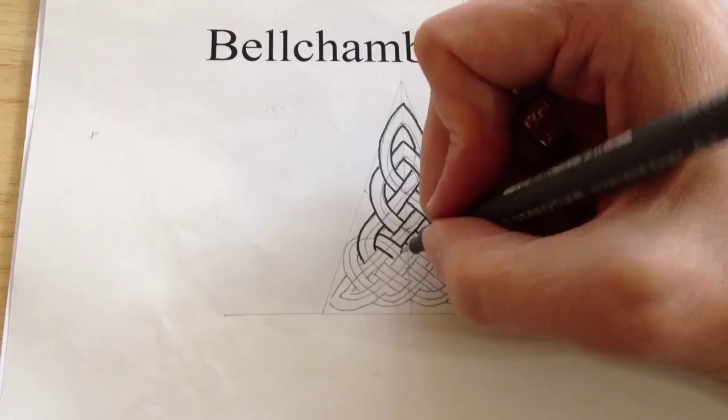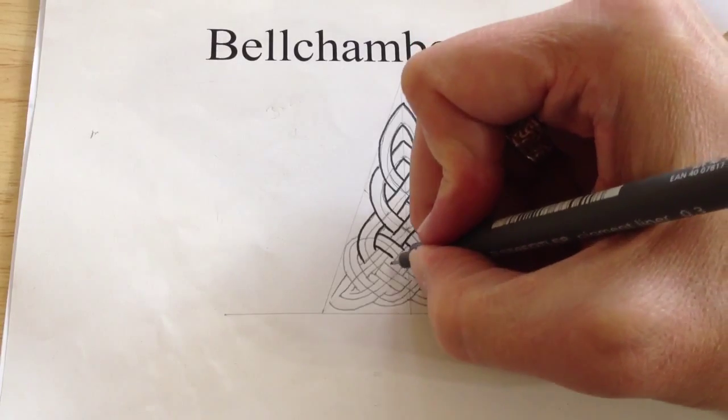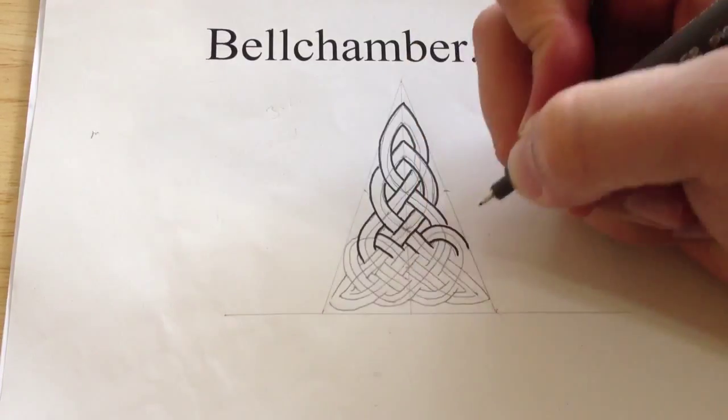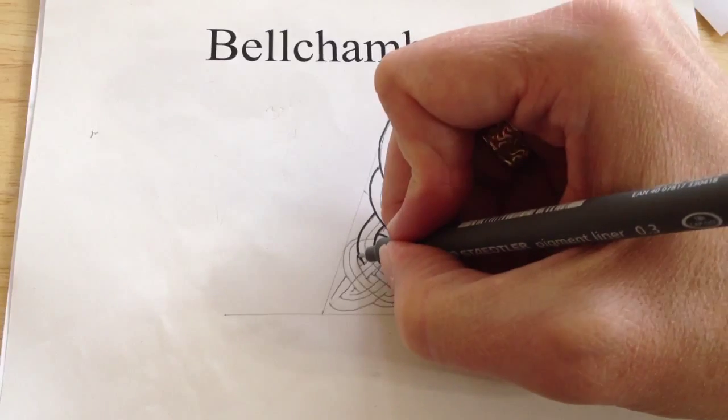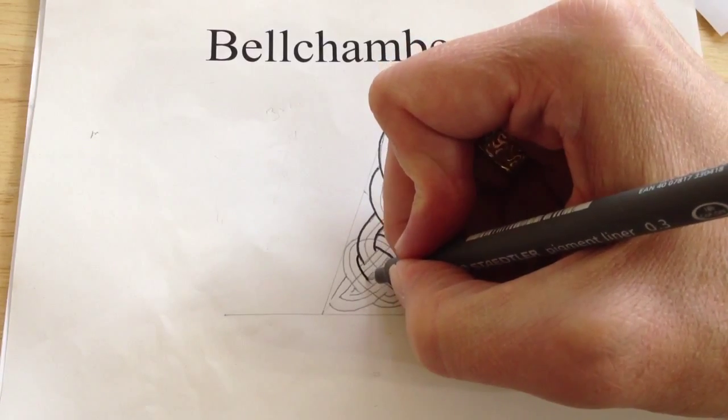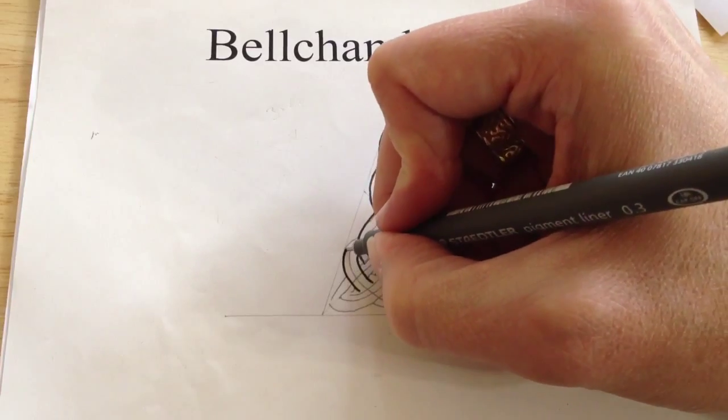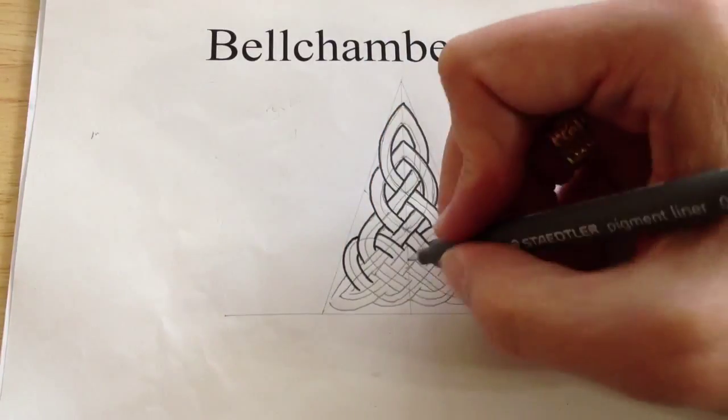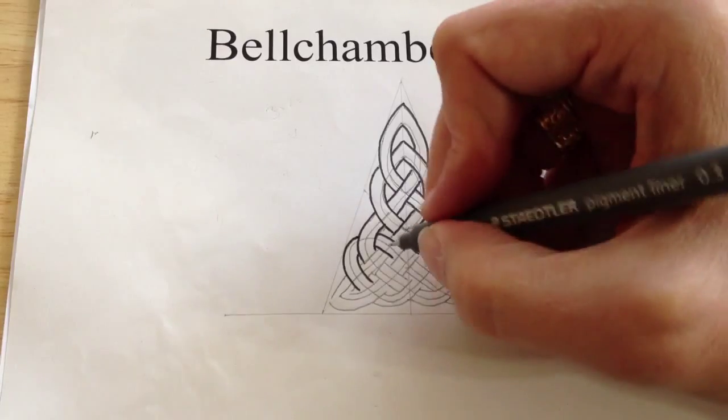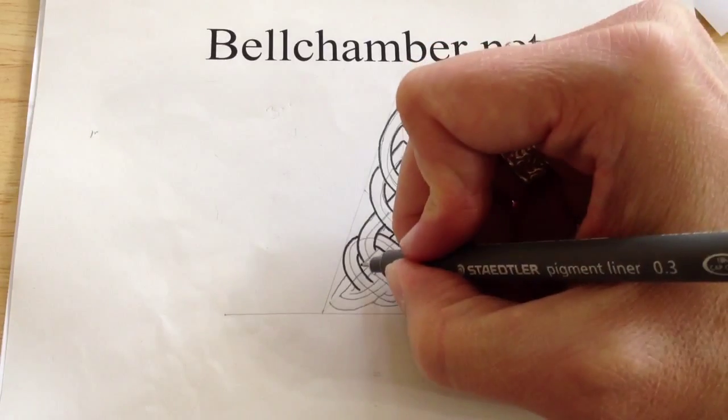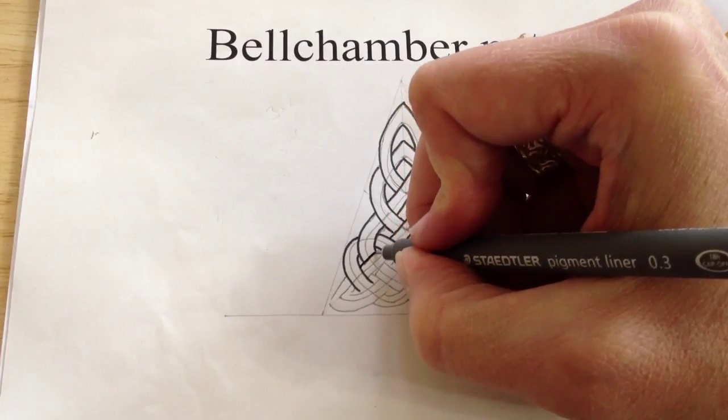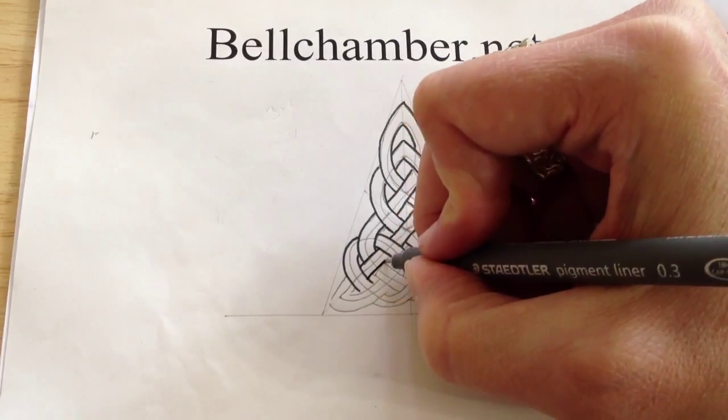Just stop short with the ink pen of where one ribbon will go over the other, just in case you make a mistake. Alright. This one goes over another. This one goes over another.